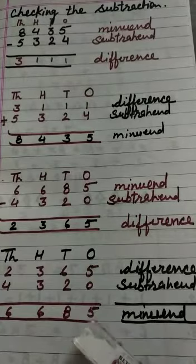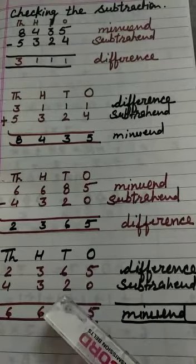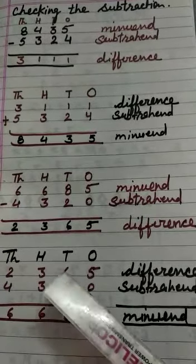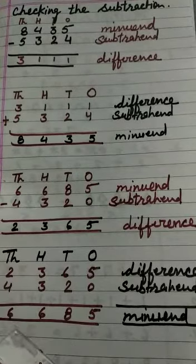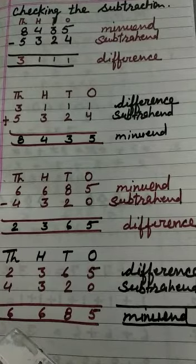5 plus 0 is 5. 6 plus 2 is 8. 3 plus 3 is 6. 2 plus 4 is 6. Good.